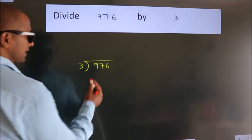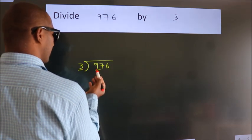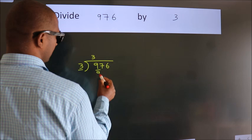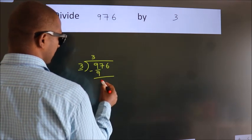Next. Here we have 9, here 3. When do we get 9? In 3 table, 3 times 3 is 9. Now, we should subtract. We get 0.